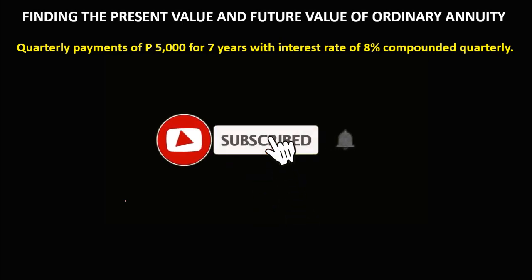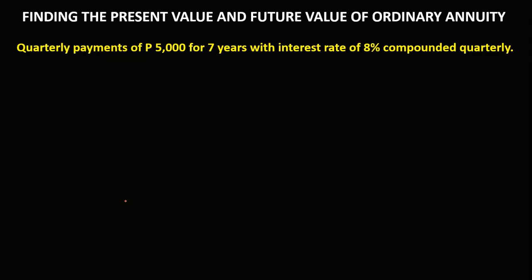Let's discuss this topic: finding the present value and future value of an ordinary annuity. We have this problem: quarterly payments of 5,000 pesos for 7 years with an interest rate of 8% compounded quarterly. Since the periodic payment is quarterly and the compounding period is also quarterly, this problem is an example of an ordinary annuity.